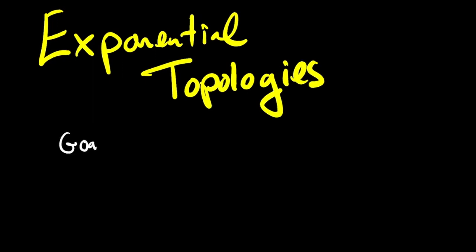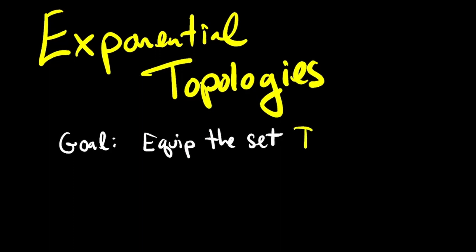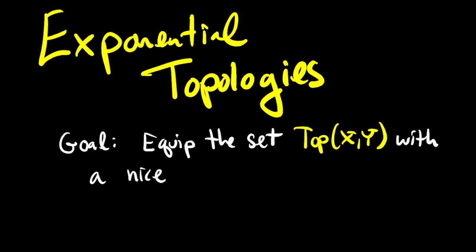Given two topological spaces x and y, you would like to promote the set of continuous functions from x to y into a topological space. An exponential topology on the set of continuous functions from x to y is a particularly nice kind of topology. In this video, I'll tell you what an exponential topology is, and I'll prove that when they exist, they're unique.